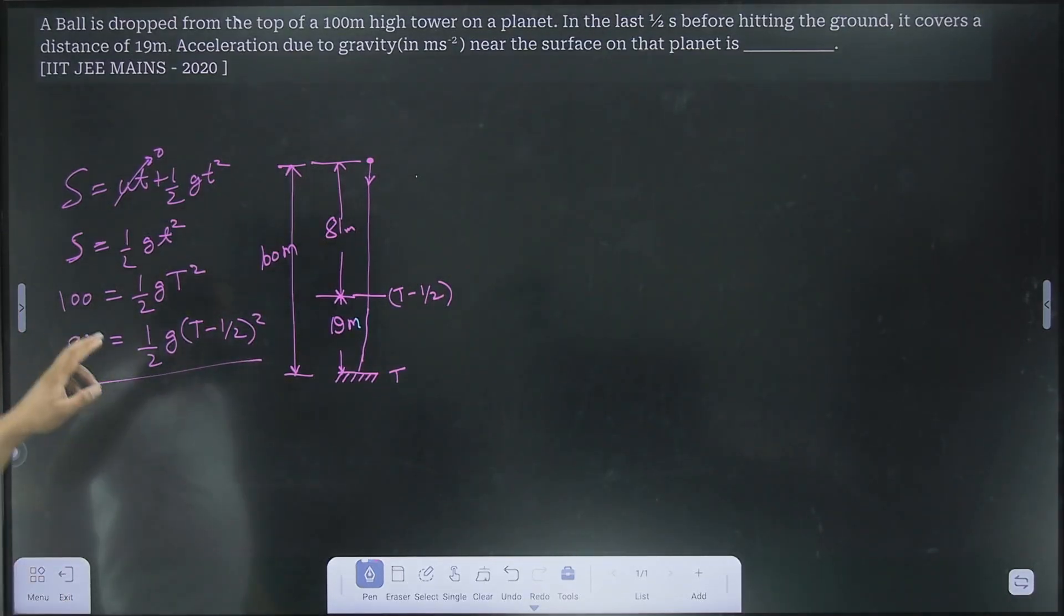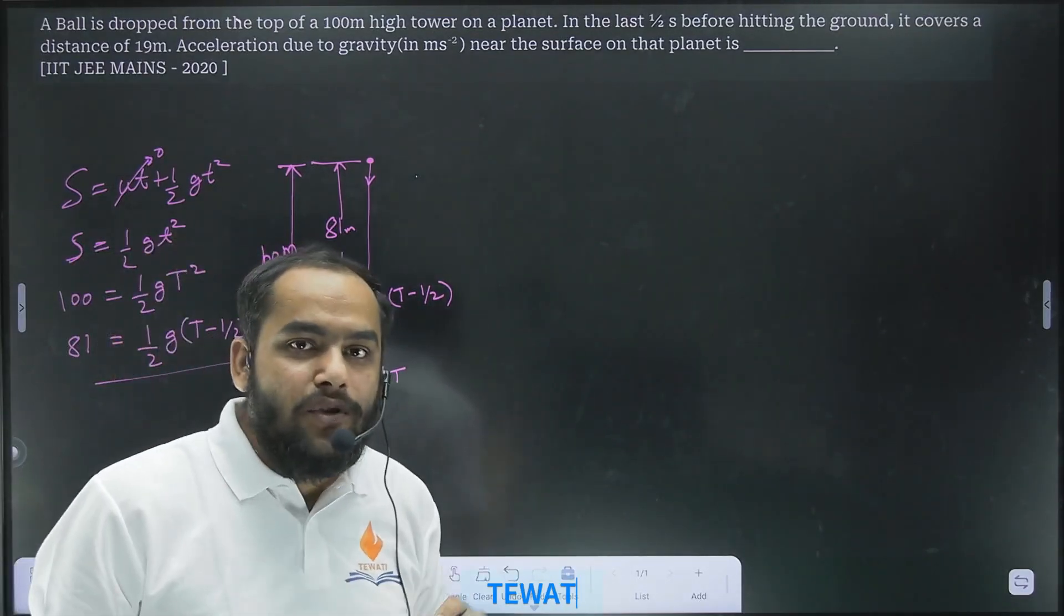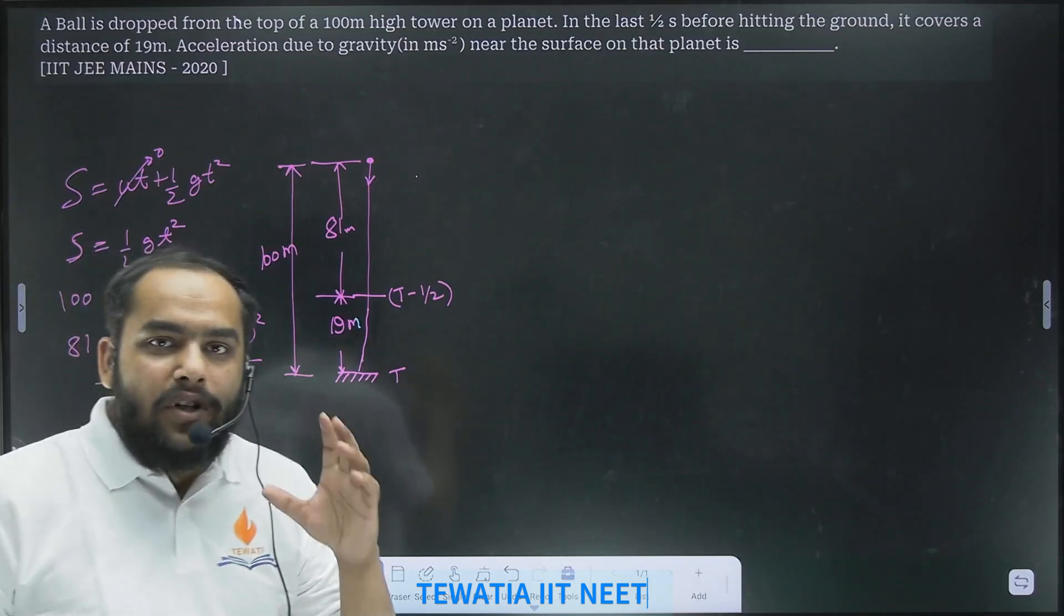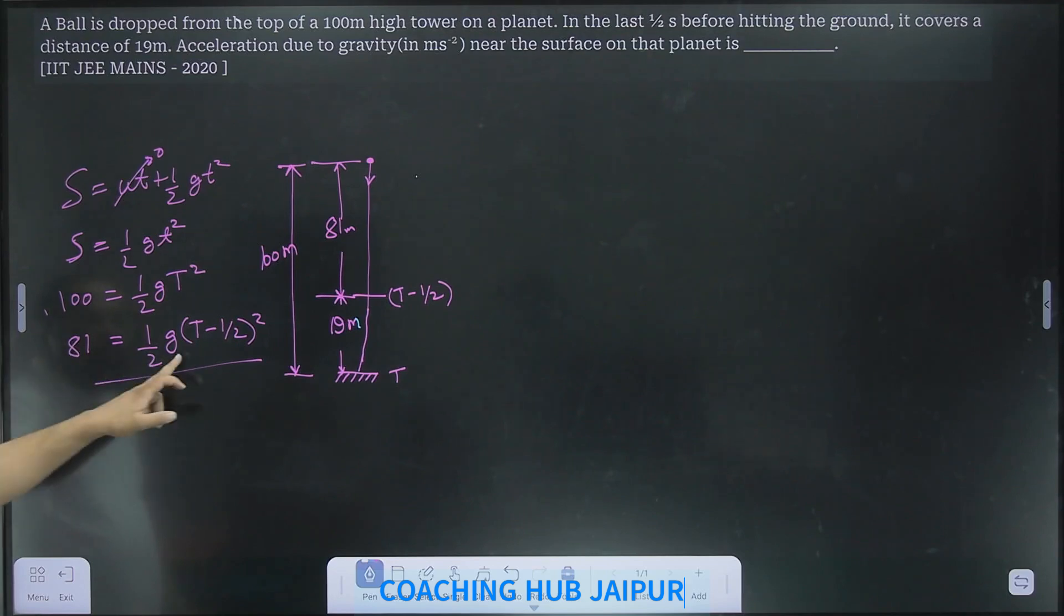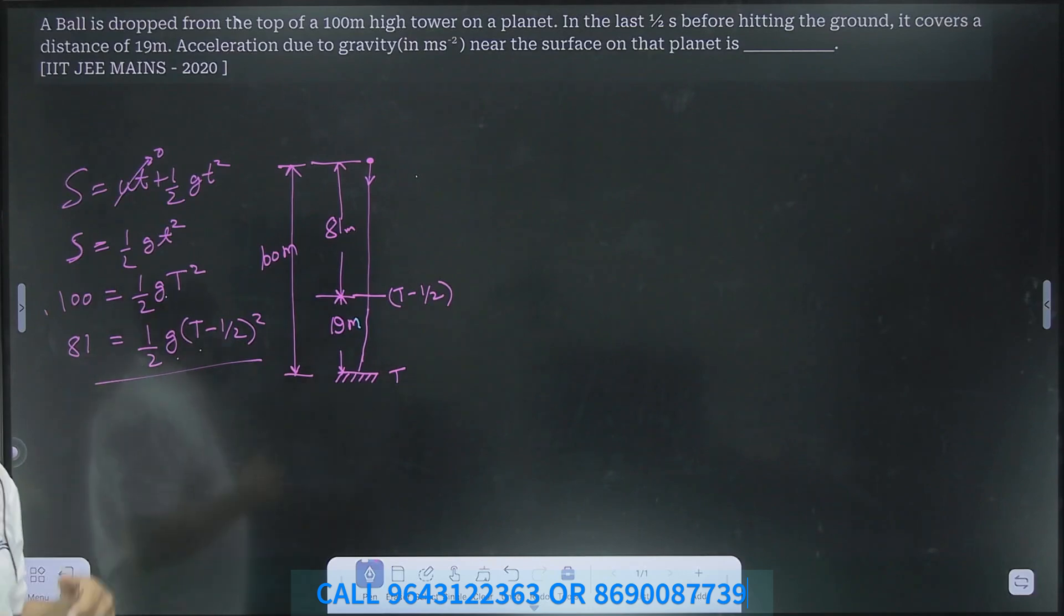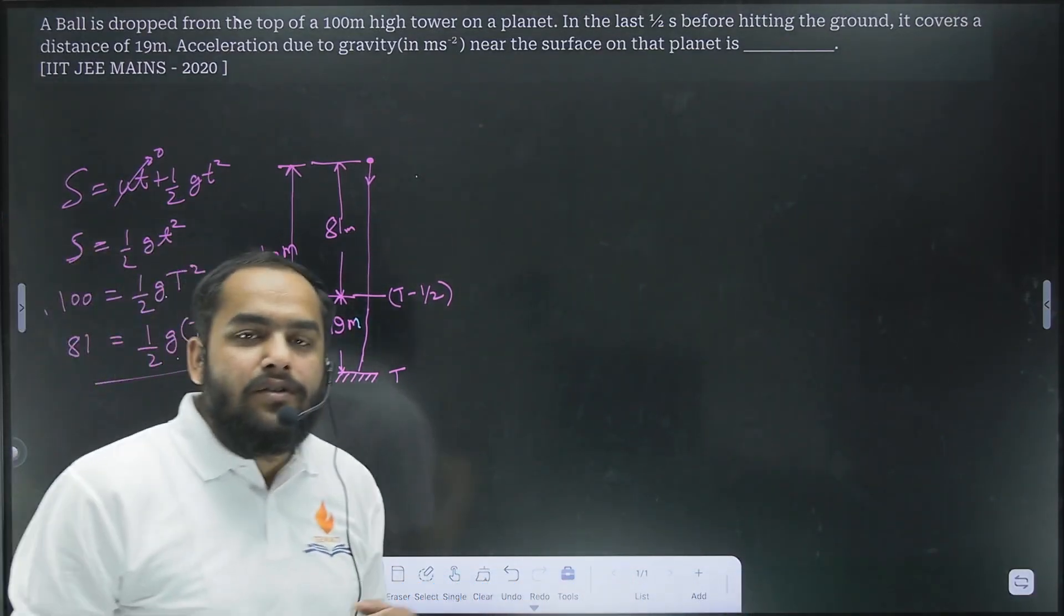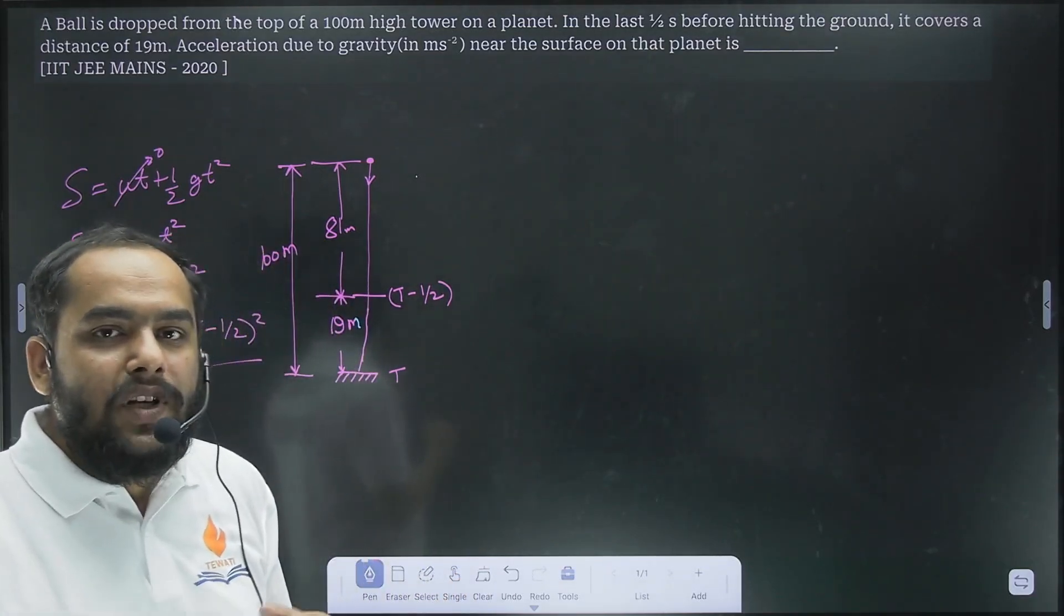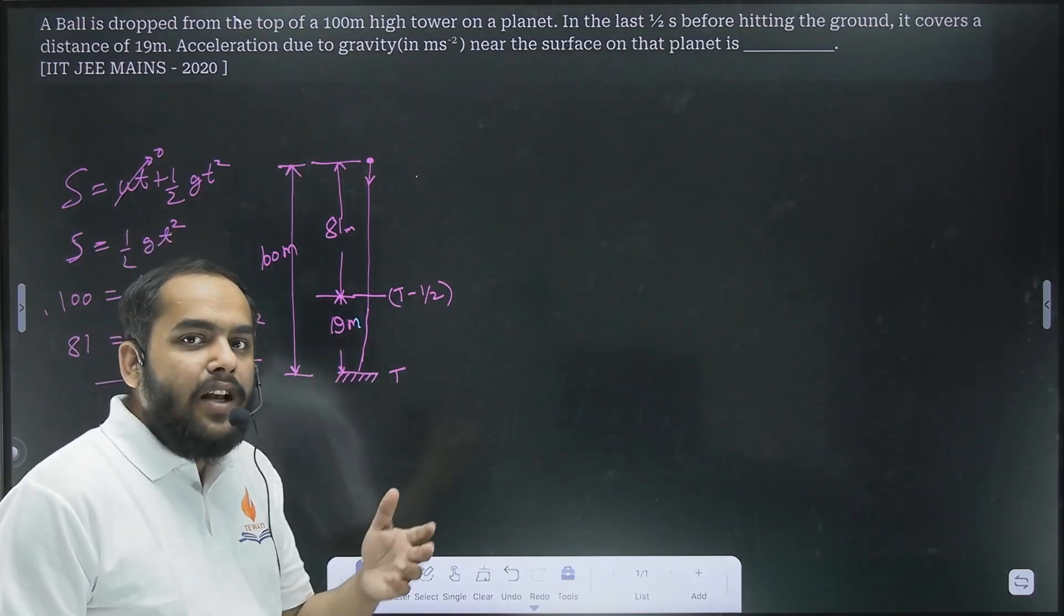Right from looking at 100 and 81 you should get a hint on what you should be trying to do. So simply we have two equations here with two unknowns g and t. What most people would try to do is find the value of g from here or here, substitute in the other equation. But that approach is going to leave you with a lot of calculation and it will take a lot of time.